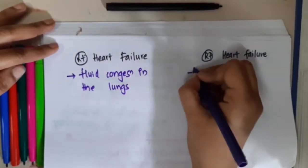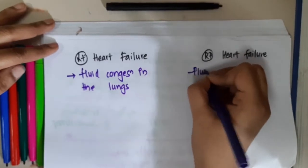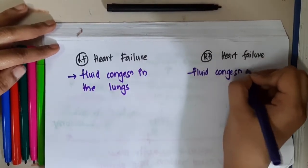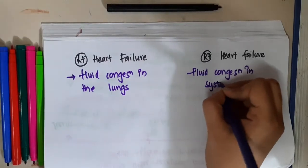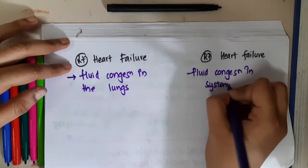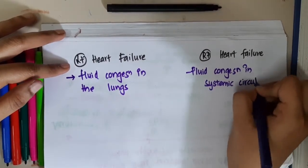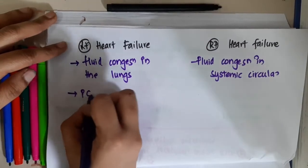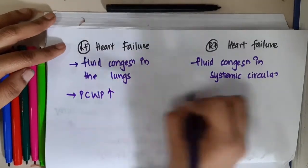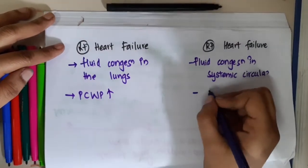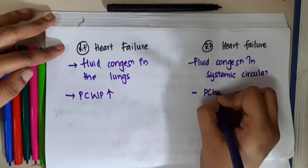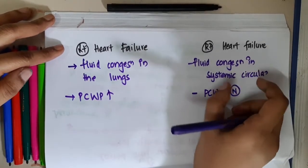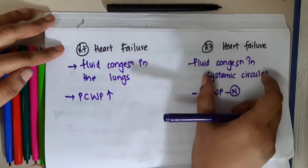Whereas in right heart failure, the fluid congestion is mainly seen in the systemic circulation. In left heart failure, pulmonary capillary wedge pressure is increased. In right heart failure, pulmonary capillary wedge pressure is normal because there is no problem in the lungs.